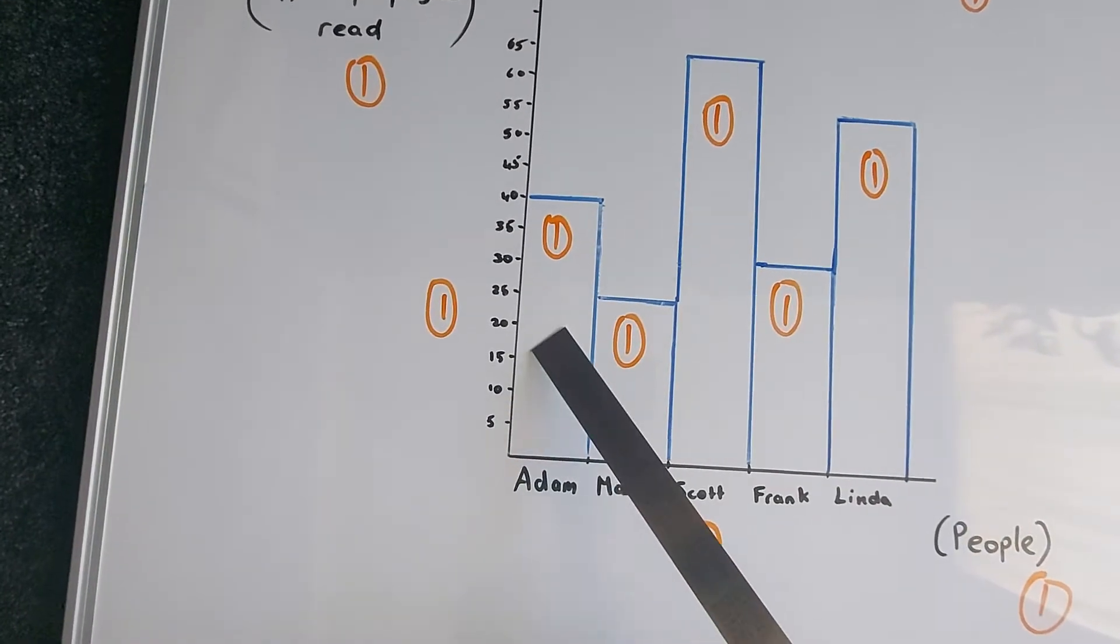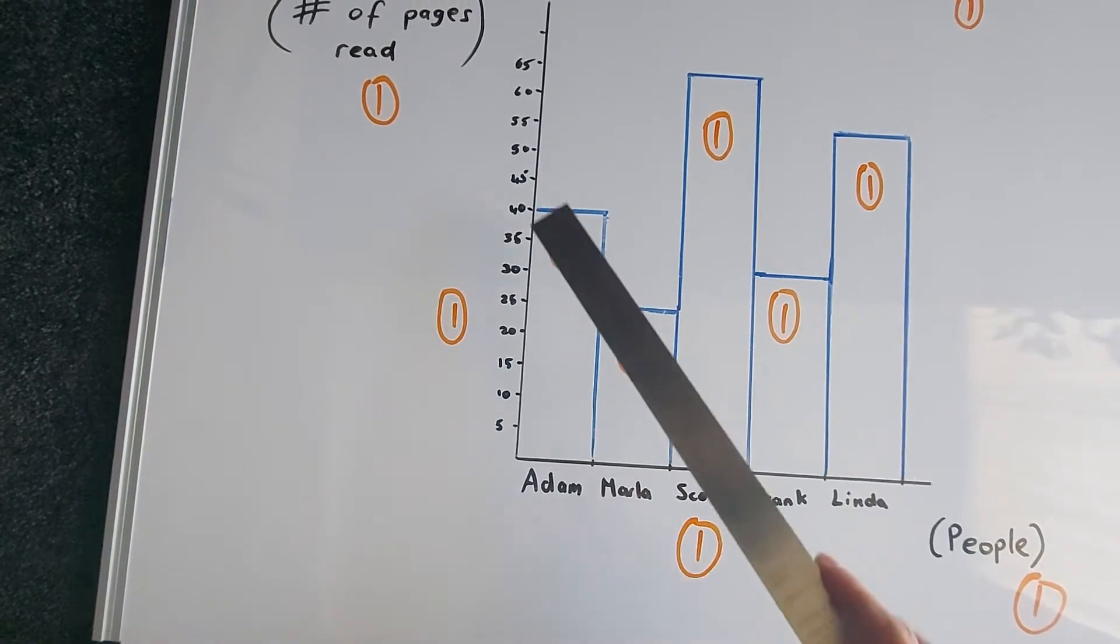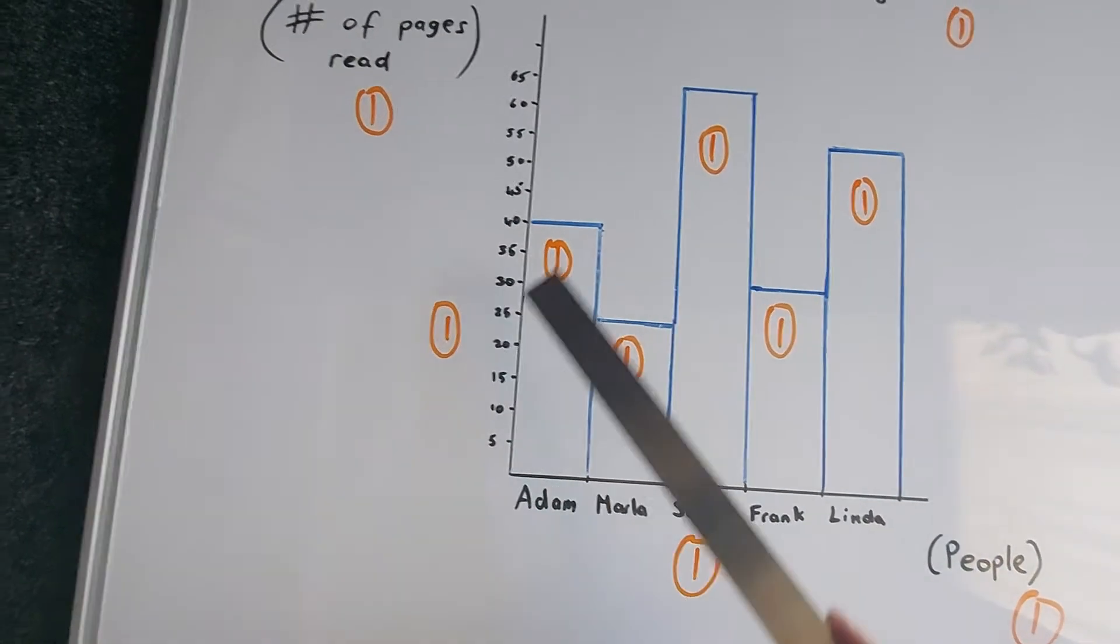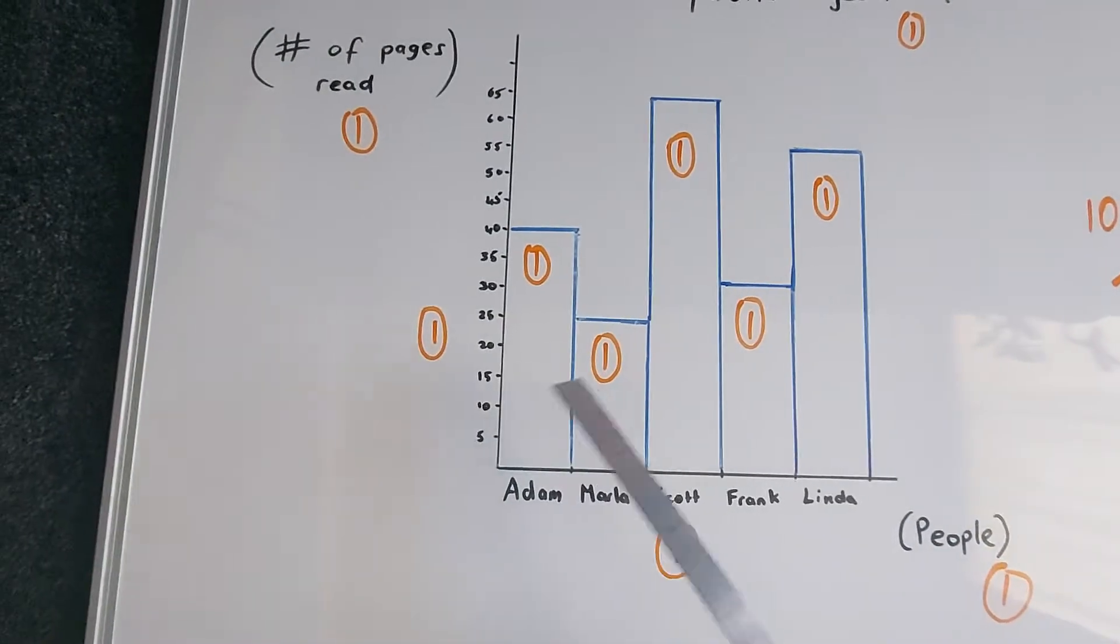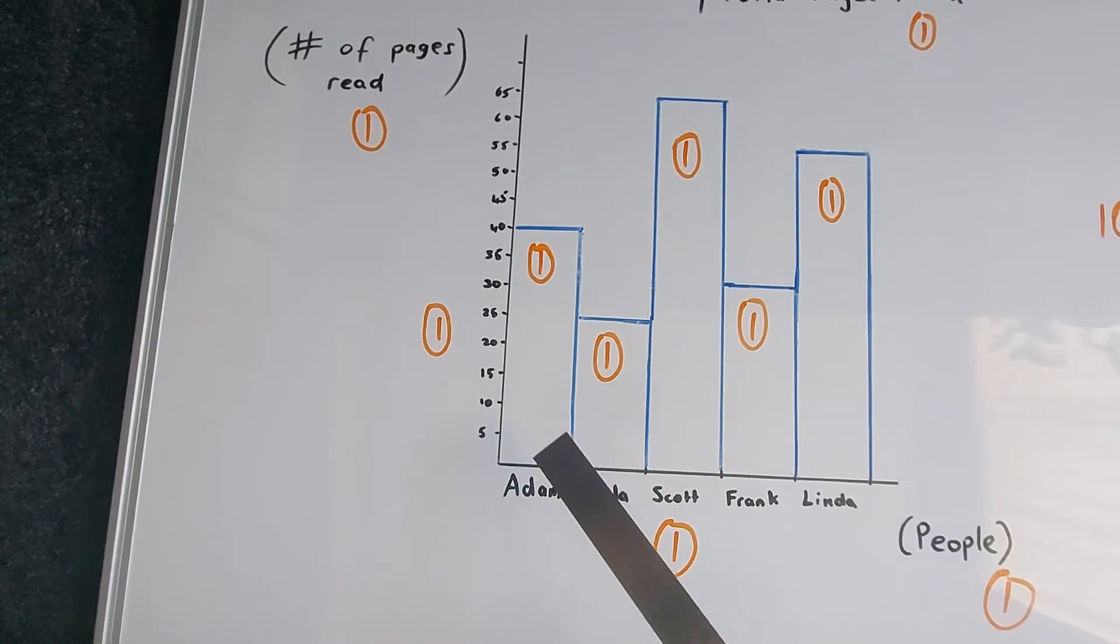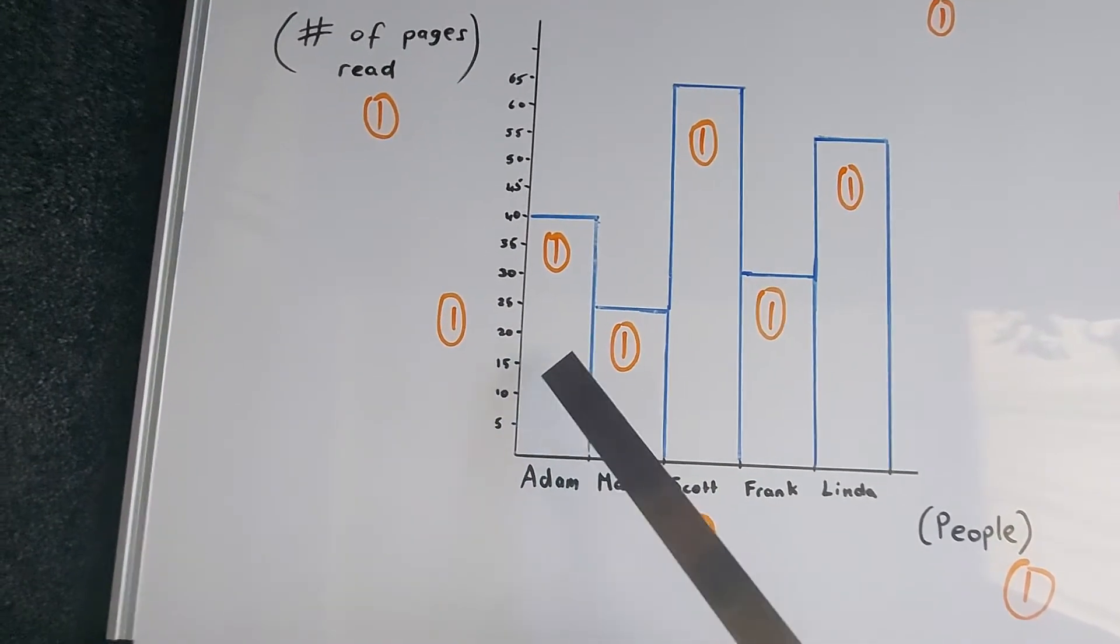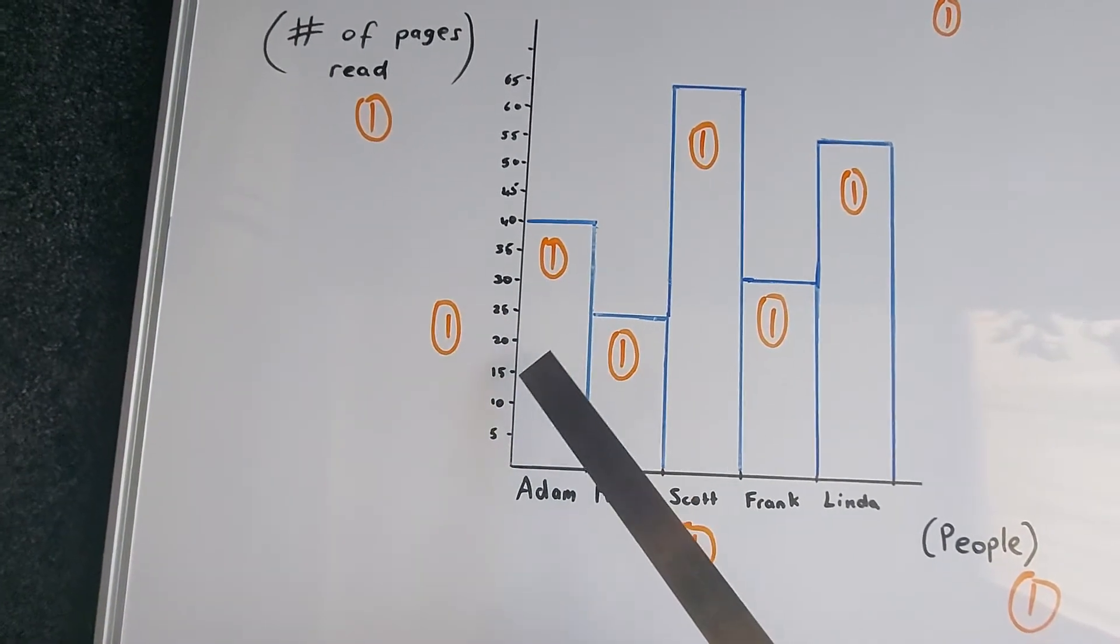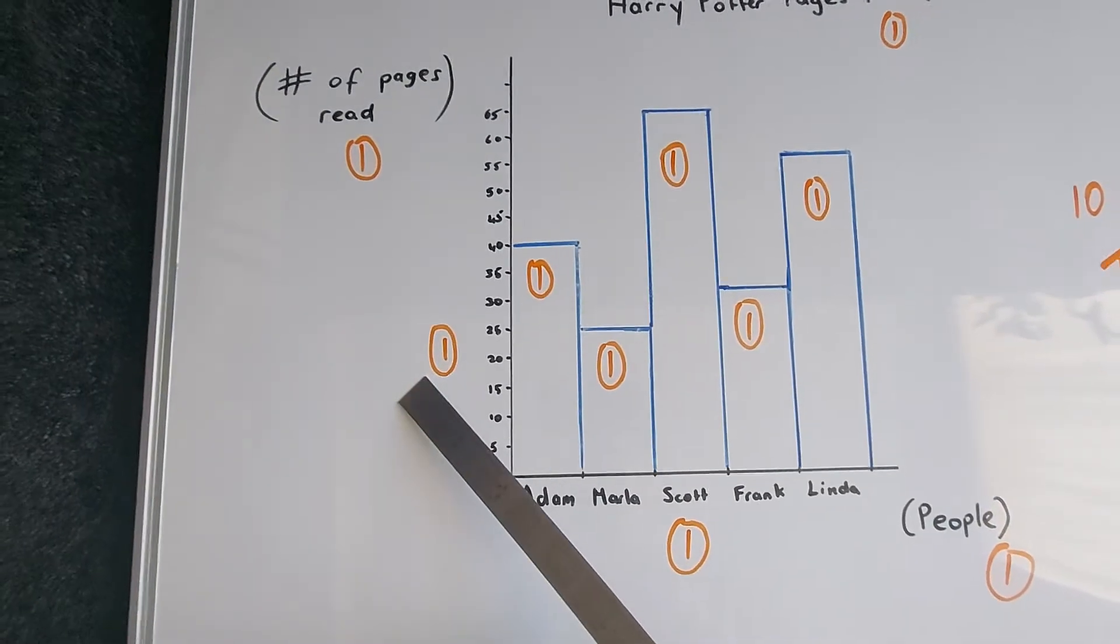I'm also going up by fives. So always the same even value as you increase the values and go higher on the y-axis. You might have done yours in tens or twos or ones. Just as long as the spacing is even, is equal to each other, and as long as each incremental jump is also the same each time. Then you can give yourself a mark there.